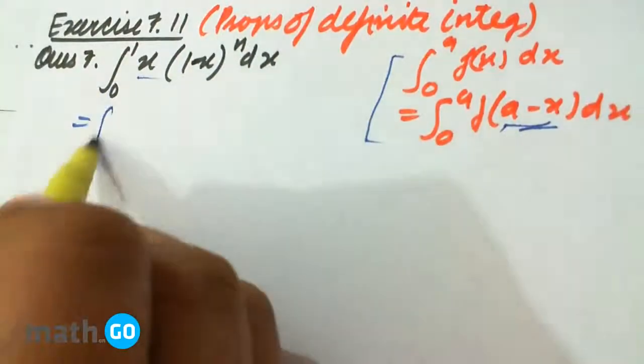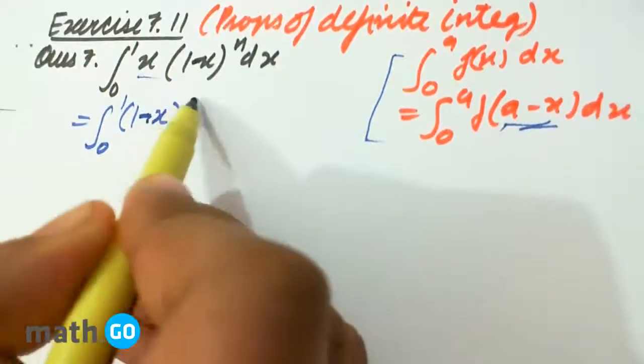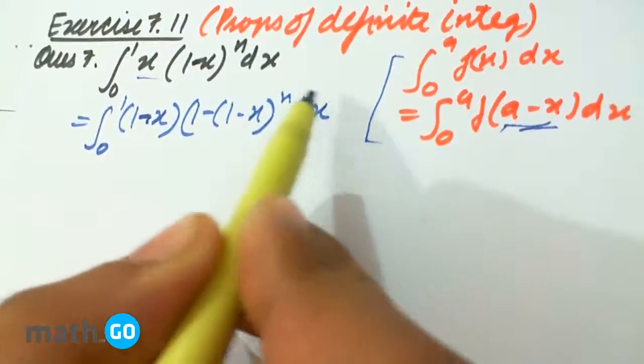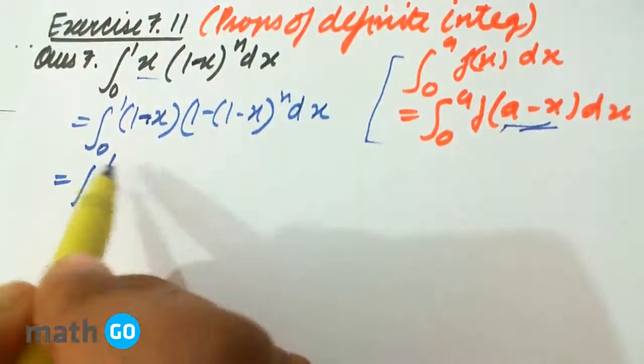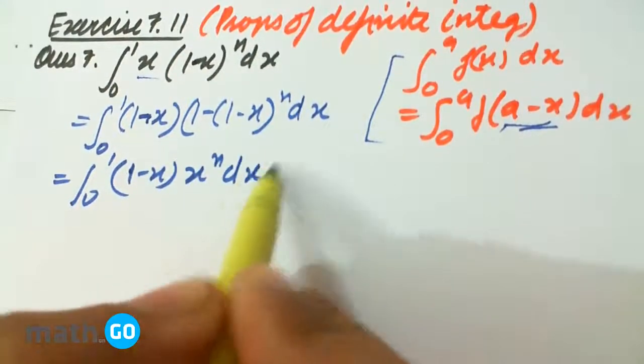So applying this property, we get the integral of (1-x)(1-(1-x))^n dx, which is nothing but the integral of (1-x)x^n dx.